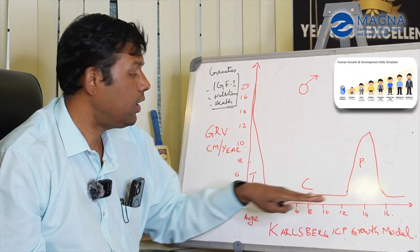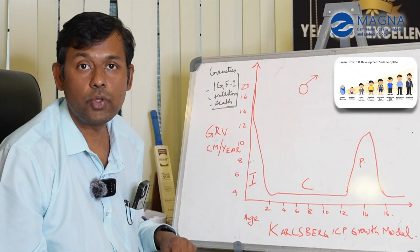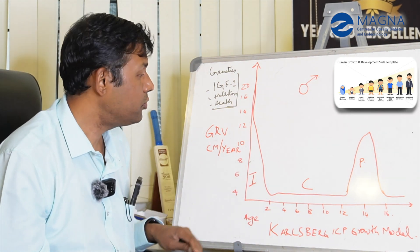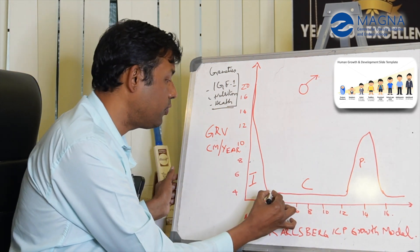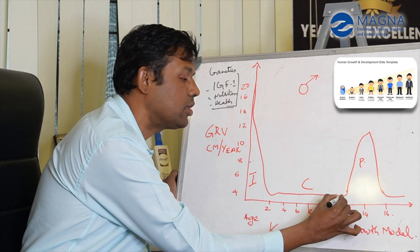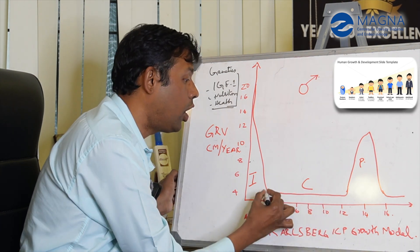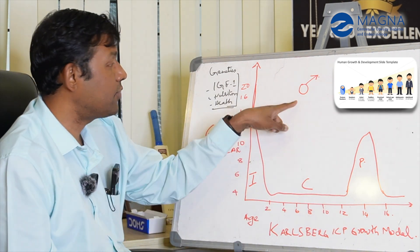Then the child grows the same way through childhood. This is called the child phase of growth, where every year the child gains only four to five centimeters of height. You can see that the growth velocity is the same - about four to five centimeters for a long duration between two and twelve years.